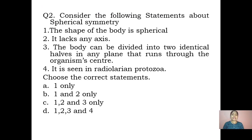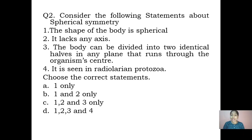Second question: consider the following statements about spherical symmetry and choose the correct statement. Statement one: the shape of the body is spherical — true. Statement two: it lacks any axis — true, as spherical symmetry has no definite axis. Statement three: the body can be divided into two identical halves in any plane that runs through the organism's center — true, only planes passing through the center yield identical halves. Statement four: it is seen in radiolarian protozoa — true. Since all four statements are correct, the answer is all of the above.